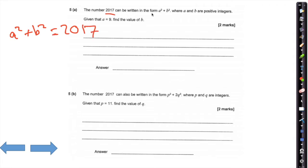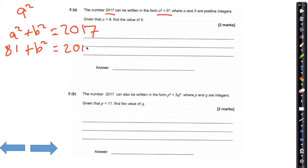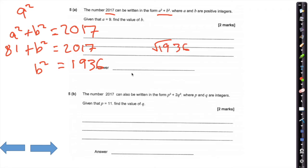The number 2017 can be written in that form, so they're equal. You know a is 9, so if you type in 9 squared, that gives you 81. 81 plus b squared equals 2017. If I subtract 81 from both sides, b squared equals 1,936. Therefore, the square root of 1,936 gives the answer of 44.